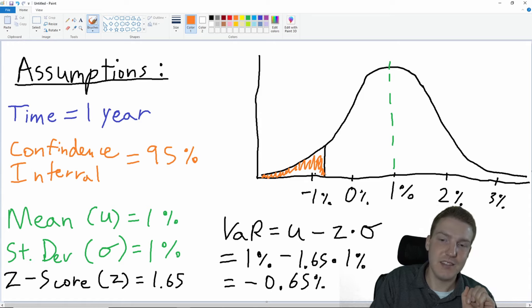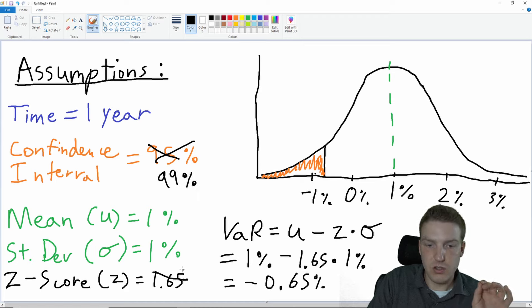If we change our confidence interval, you can see how this changes our outcome. Let's say instead of 95%, we use 99%. With 99%, our z-score is now 2.33. If we change our z-score to 2.33, assume I'm writing 2.33 there.